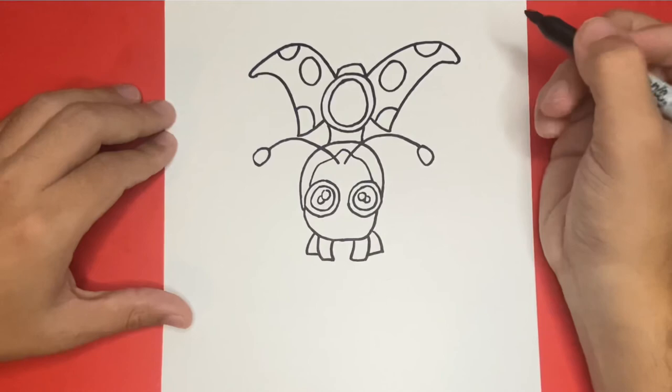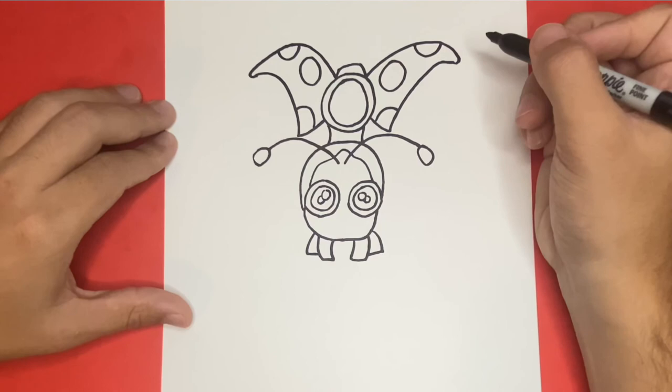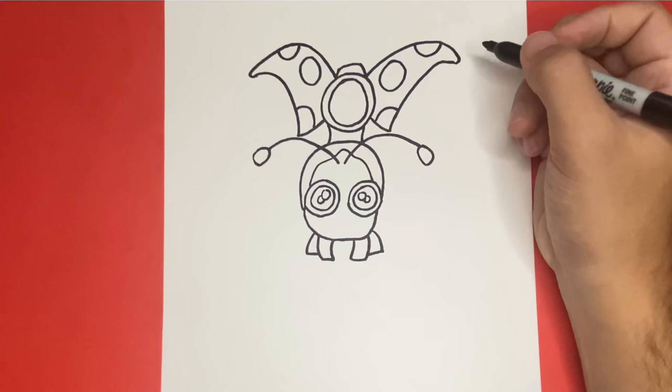Now, last but not least, before we color in today's drawing, let's go ahead and draw the sides of Shutterbug, beginning with the right-hand side. And don't forget that at the end of today's video, I'll show you a picture of my drawing all colored in, just in case you want to pause the video and match your colors.